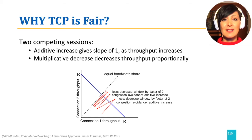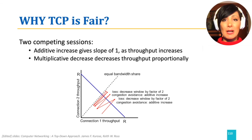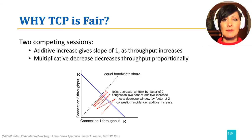Fairness is the result of probing and aiming for available bandwidth and stepping back when experiencing congestion, which is the behavior of AIMD.